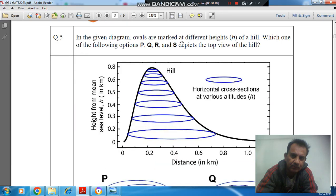In the given diagram, ovals are marked at different heights H of a hill. Which one of the following options P, Q, R, and S depicts the top view of the hill?